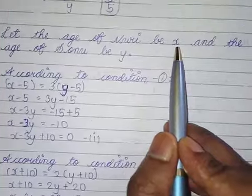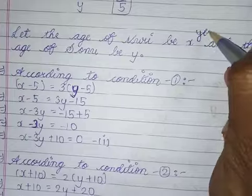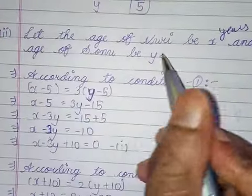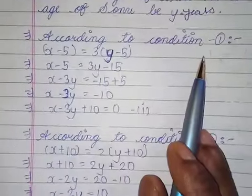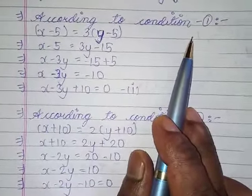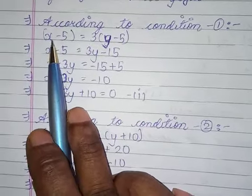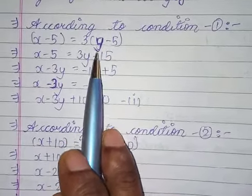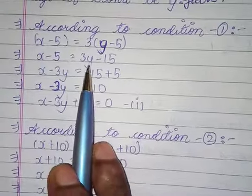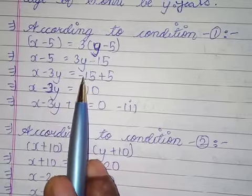Let the age of Nory be x years and Sunu be y years. According to the first condition, 5 years ago means x minus 5 and y minus 5. Nory was 3 times as old as Sunu, so x minus 5 is equal to 3 times y minus 5. Expanding and rearranging: x minus 3y is equal to minus 10.